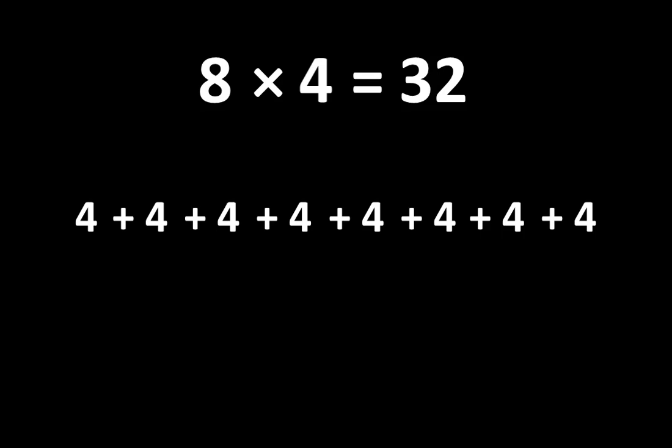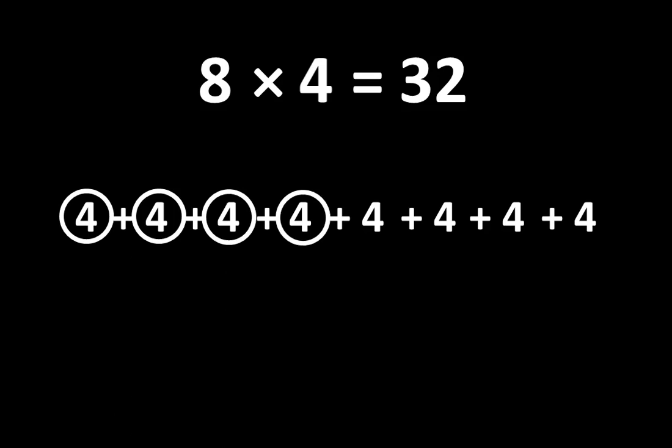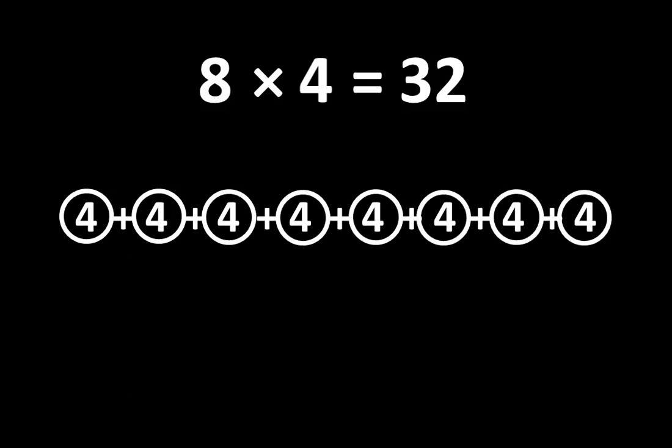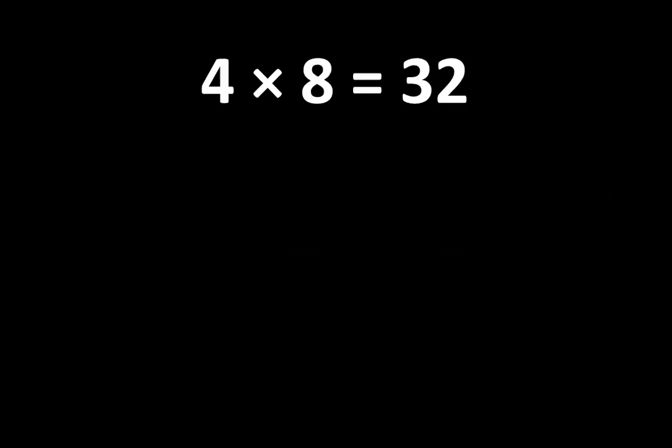If we count the groups of 4, we can see that there are 1, 2, 3, 4, 5, 6, 7, 8 groups of 4, which is equal to 32. 4 times 8 is equal to 32. And there are many more important ideas.